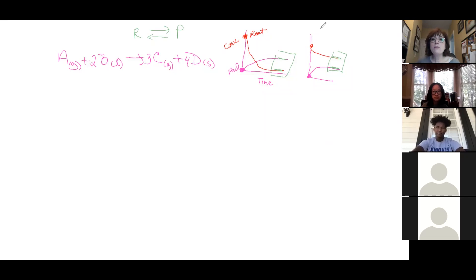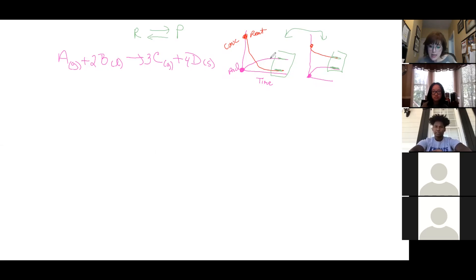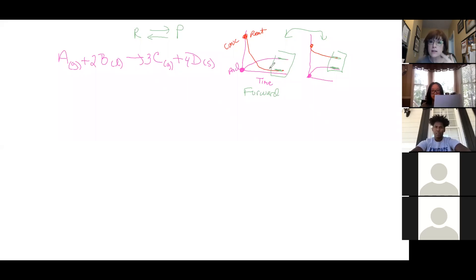You need to be able to compare the two equilibrium graph shapes. A mnemonic device: 'fishy forward.' When the graph looks like a fishtail — reactants high, products rising — it's a forward-favoring reaction. The other shape, where products start high and reactants fall, favors the reverse direction.